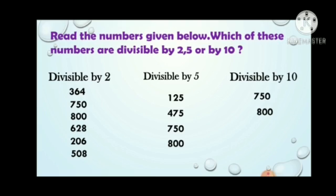5345 — it is divisible by 5. 8710 — it is divisible by 2 as well as 5 as well as 10.